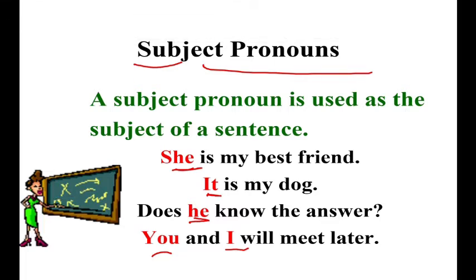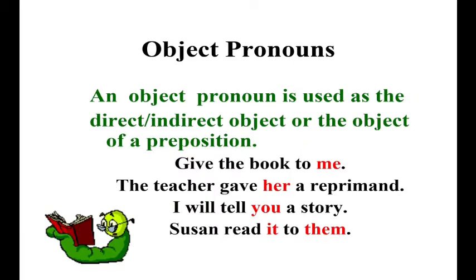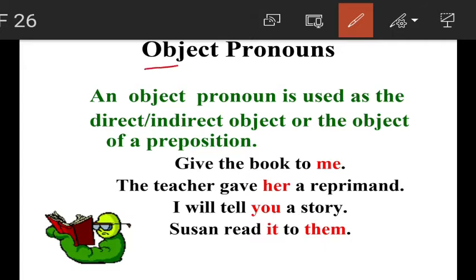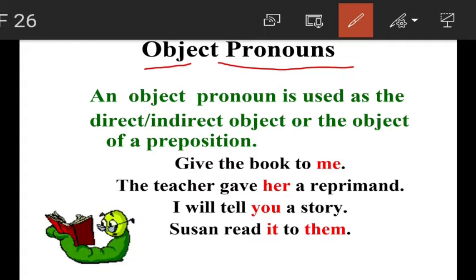Subject pronouns are used as the subject of the sentence — as the doer of the action. Next is object pronoun. An object pronoun is used as the direct or indirect object, or the object of a preposition.